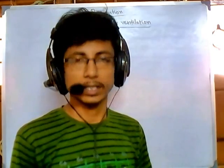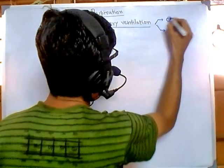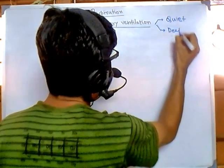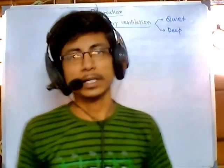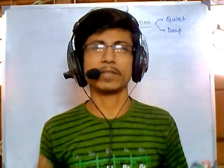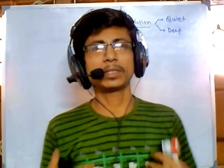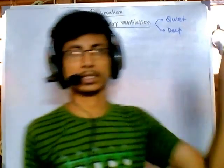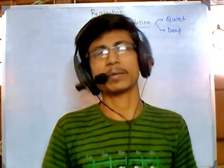One is quiet respiration and another is deep pulmonary respiration. Normally when we are doing everyday tasks and oxygen levels in our body are fine, we take gentle breathing — that's called quiet breathing or quiet respiration. In this case our rib cages are uplifted slightly and we take oxygen according to our need.